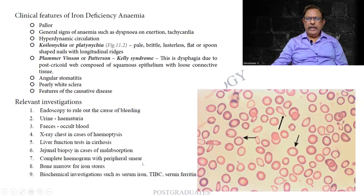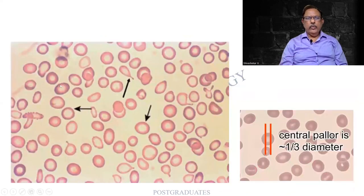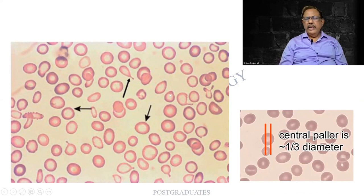A complete hemogram can be done — complete hemogram means all the details: RBC, WBC, platelets, etc. You find that biochemical tests such as iron-binding capacities and serum ferritin are other relevant investigations. Most important will be the peripheral smear — comparing normal to iron deficiency, you find cells with increased pallor, variation in size. The smear shows microcytic, hypochromic red cells with anisopoikilocytosis, elongated cells, teardrop cells, etc.